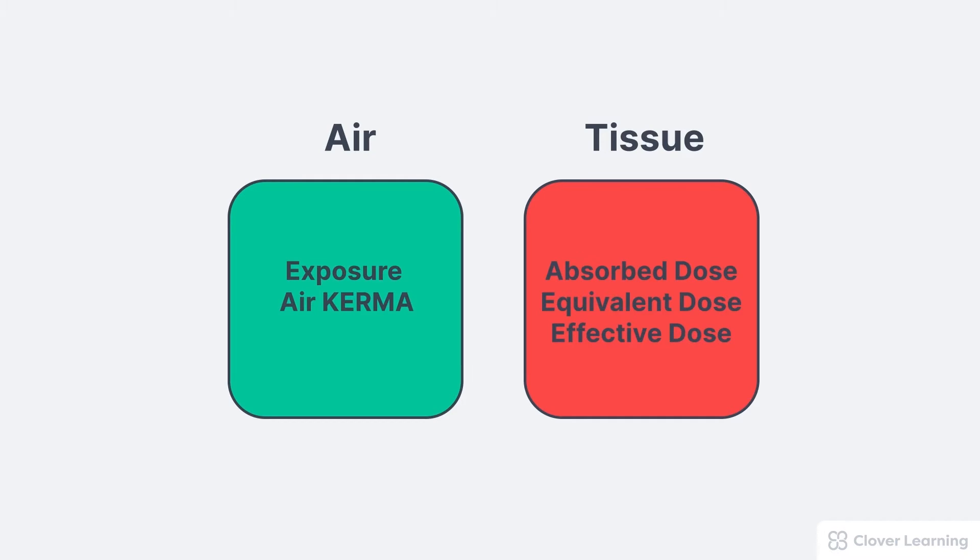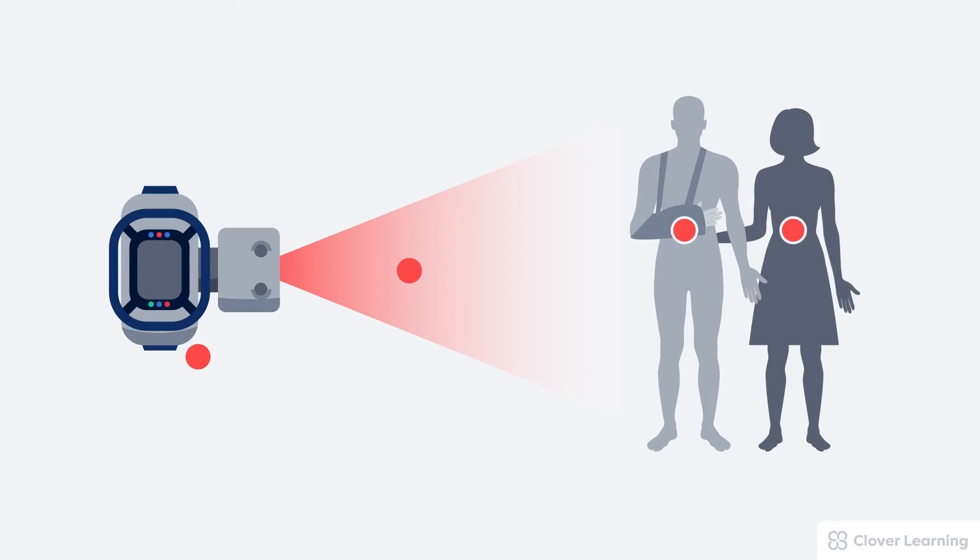All of these measurements are different, but related. Here's an example. If we wanted to, we could measure each of these values during a single x-ray exposure. The intensity of the x-ray beam is usually measured as the exposure or the air kerma. These values tell us how much radiation is coming out of the x-ray tube and is directed at the patient. We could also use the air kerma and exposure to measure the leakage radiation escaping the tube housing.